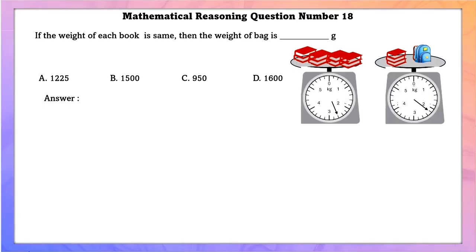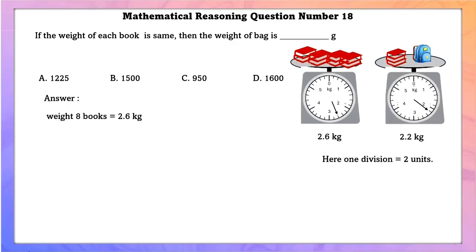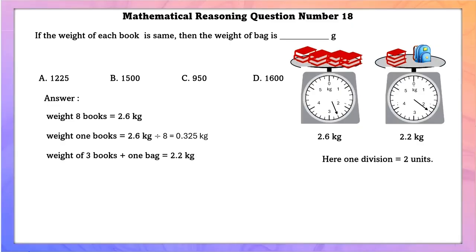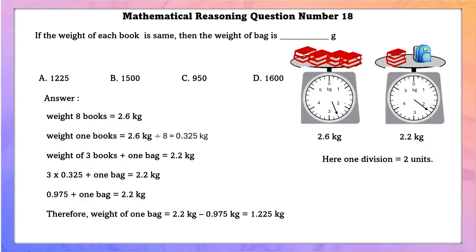Mathematical reasoning question number 18. If the weight of each book is the same, find the weight of the bag in grams. One division equals two units. Weight of 8 books is 2.6 kg, so weight of one book is 0.325 kg. Weight of 3 books plus one bag is 2.2 kg, so 0.975 + one bag = 2.2 kg. Therefore, the weight of one bag is 1.225 kg, which is 1,225 grams.